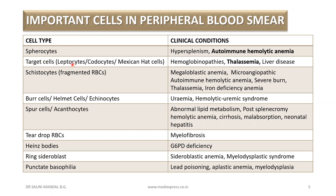To recap the cell types: spherocytes, target cells (leptocytes, codocytes, Mexican hat cells), fragmented RBCs, burr cells, helmet cells, echinocytes, spur cells or acanthocytes, teardrop RBCs, Heinz bodies, ring sideroblasts, and punctate basophilia. Additionally, Howell-Jolly bodies are seen after splenectomy or in megaloblastic anemia and severe hemolytic anemia.